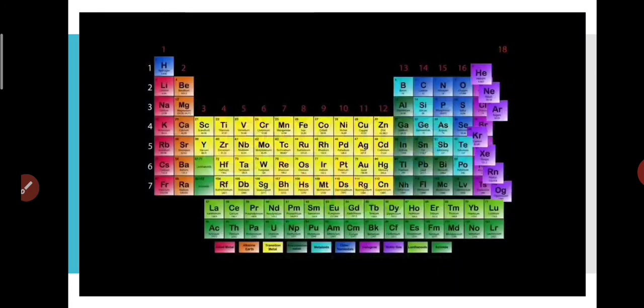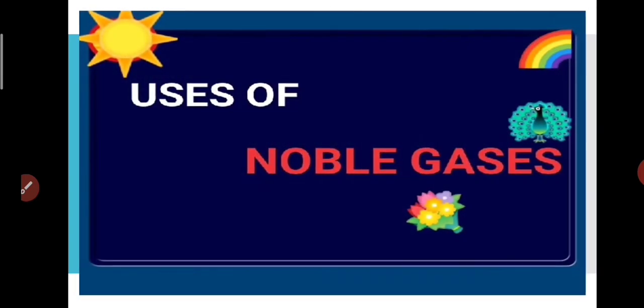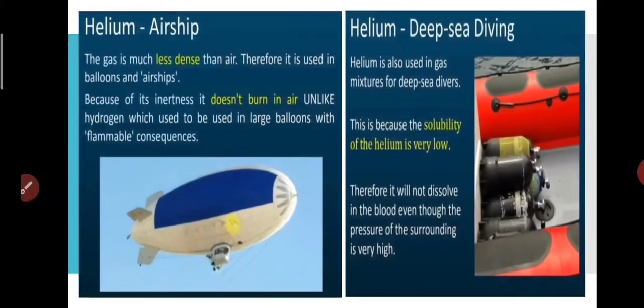Now, let's see some uses of the noble gases. The first one is helium. It is used in making or in filling the balloons and airships as it is less dense than air. Hydrogen is also less dense, still it is not used because it is a flammable gas. It burns easily.